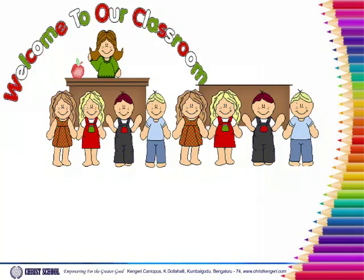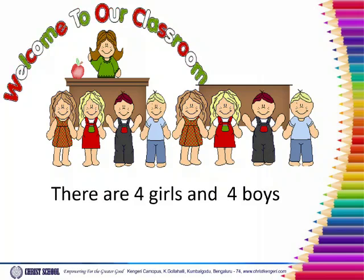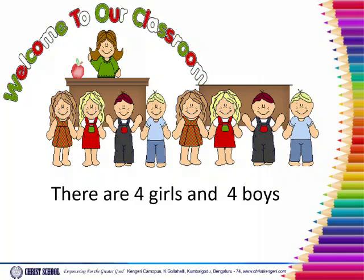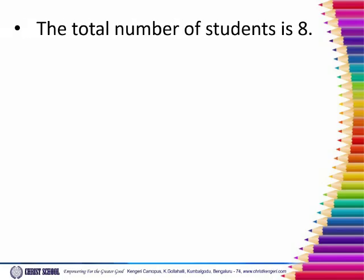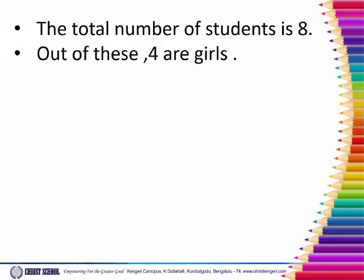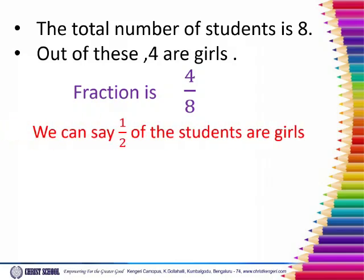Welcome to our classroom. There are 4 girls and 4 boys. What fraction of students are girls? The total number of students is 8. Out of these, 4 are girls. The fraction is 4 by 8, where 8 is the total number of students and 4 is the number of girls. We can say 1 by 2 of the students are girls.